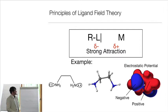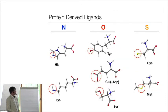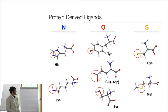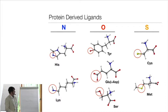There are very few biologically relevant protein-derived ligands. For nitrogen donors there is histidine and lysine; for oxygen there is tyrosinate, glutamate, carboxylate, serine alcohol, or its deprotonated alkoxide; and for sulfur there is thiolate from cysteine and thioether from methionine. That's actually all — that is all that proteins have to offer in terms of coordinating ligands.